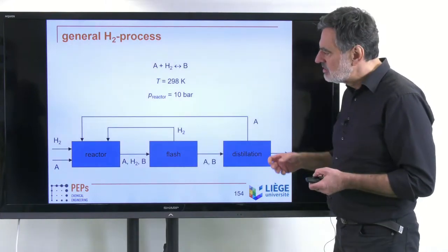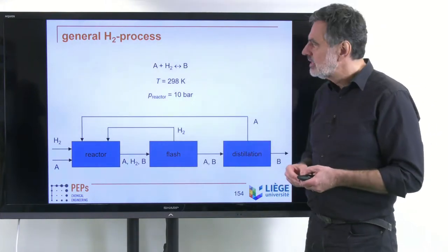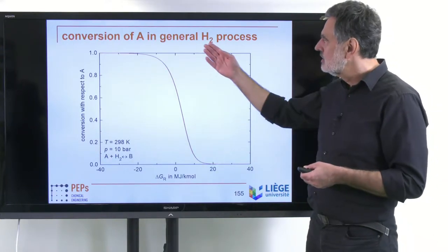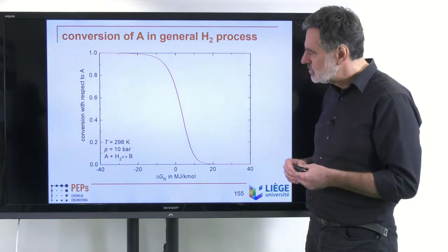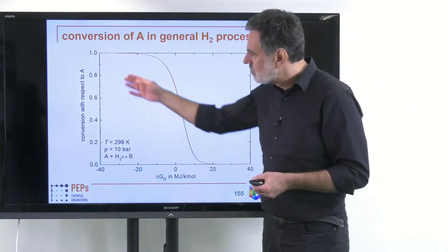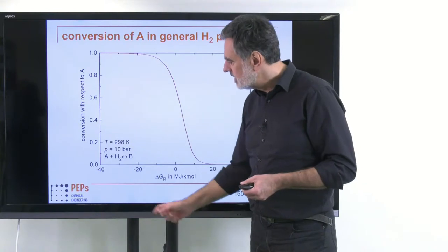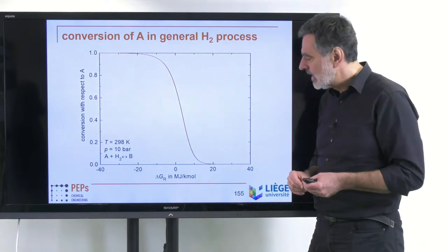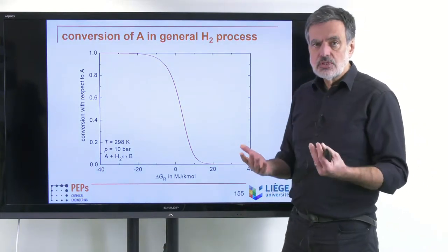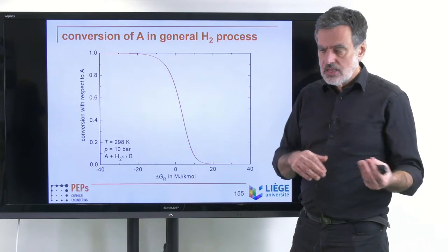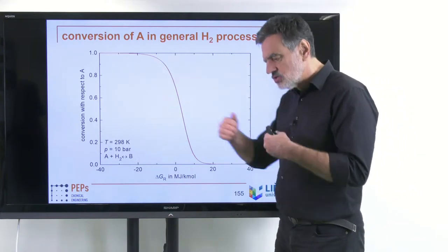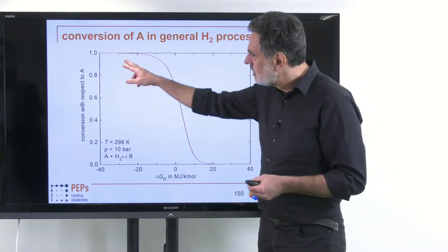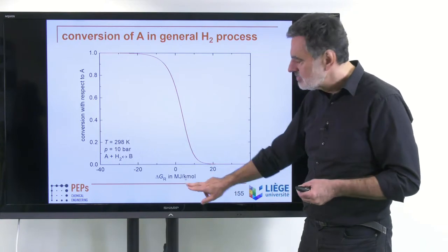If one looks at the reaction, the conversion of component A in this general hydrogenation process — as a function of the free energy of reaction, which at ambient conditions equals the chemical exergy change across the reaction — that conversion decreases significantly if these values are positive.